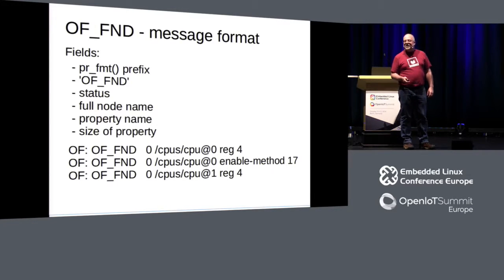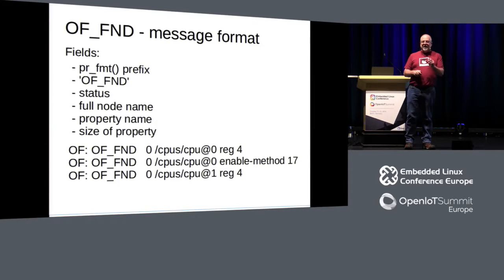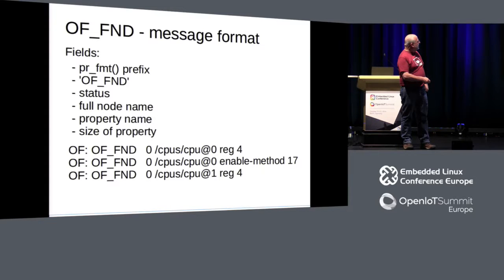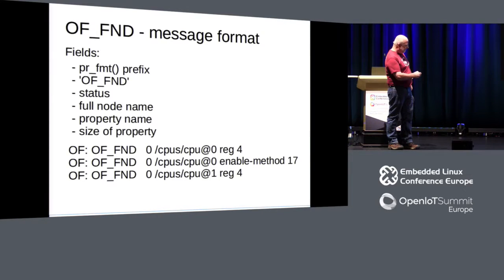Here are some examples: for node /CPUs/cpu@0, first the 'reg' property is accessed, then the 'enable-method' property on the same node, then cpu@1 accessing its 'reg' property. The statuses are the same statuses that come back from the internal APIs. The most important one is success — it was able to access the property. You're most likely to see minus 22 EINVAL if it doesn't exist. There are other errors if the data is malformed.